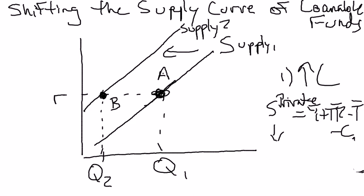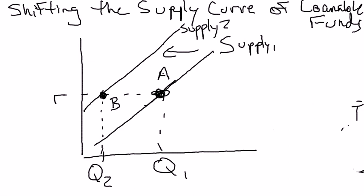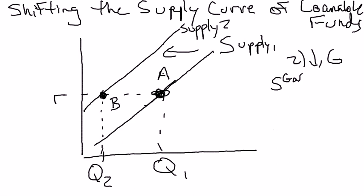Now let's do an example that causes an increase in national savings and therefore shifts the supply curve to the right. Suppose the government decides to decrease government spending — a war ends. Let's think about this. Government savings equals taxes minus transfers minus G. We're keeping taxes and transfer payments constant.